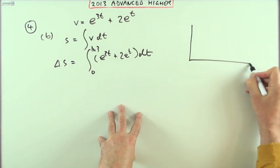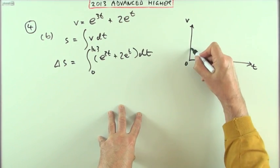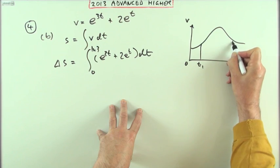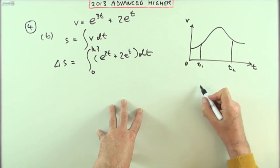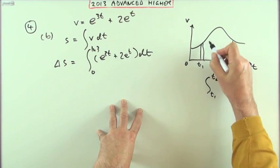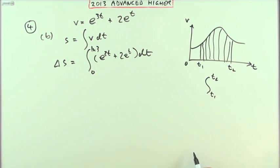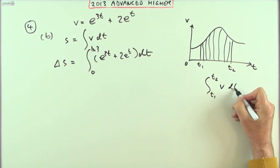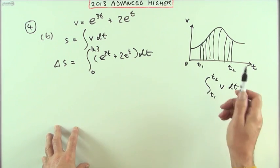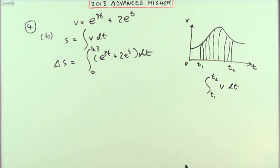Because taking a velocity time graph, whatever it may look like, to find the distance travelled between two times, it's simply the integral from one time to the other, it's simply the area under the graph between those two times. So it would be the integral of v dt. Now you would know that if you did the mechanics part of advanced higher, or if you do physics.